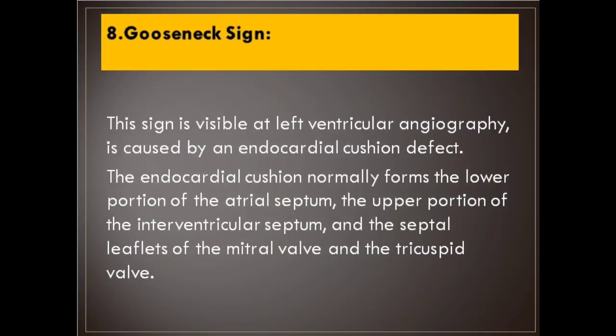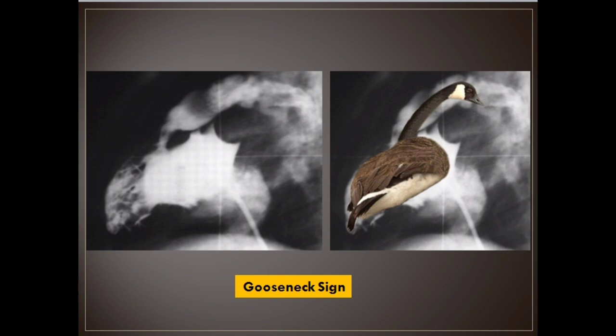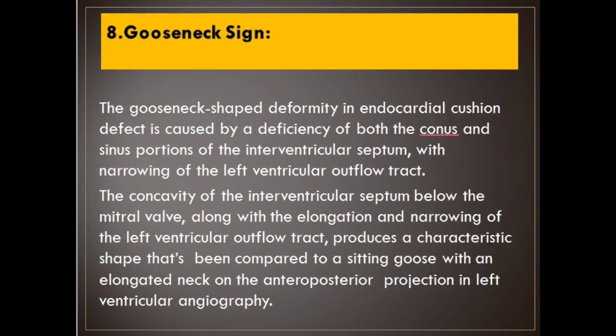Number 8: Gooseneck sign. This sign is visible at left ventricular angiography and is caused by an endocardial cushion defect. The endocardial cushion normally forms the lower portion of the atrial septum, the upper portion of the interventricular septum, and the septal leaflets of the mitral and tricuspid valves. The gooseneck deformity is caused by a deficiency of both the conus and sinus portions of the interventricular septum with narrowing of the left ventricular outflow tract. The concavity of the interventricular septum below the mitral valve, along with elongation and narrowing of the left ventricular outflow tract, produces a shape compared to a sitting goose with an elongated neck on the anteroposterior projection.